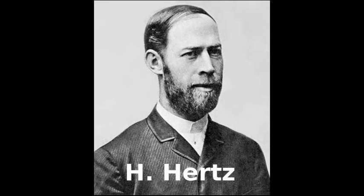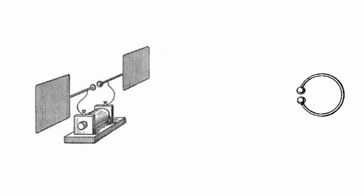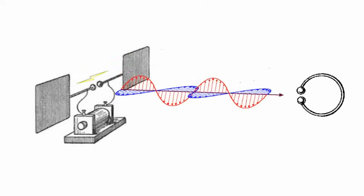Heinrich's equipment was simple: a spark generator coupled to an antenna and a metallic ring set at some distance apart. Heinrich proposed that the electromagnetic waves generated at the antenna will travel through space and if Maxwell's theory was correct, they would induce a current in the ring and a spark will appear in the ring gap.